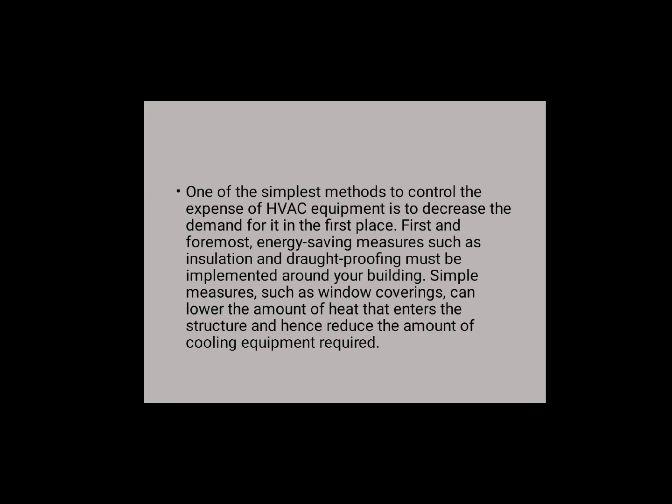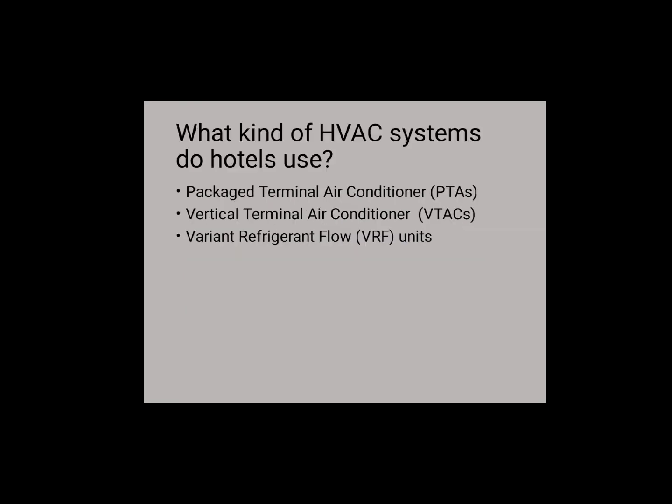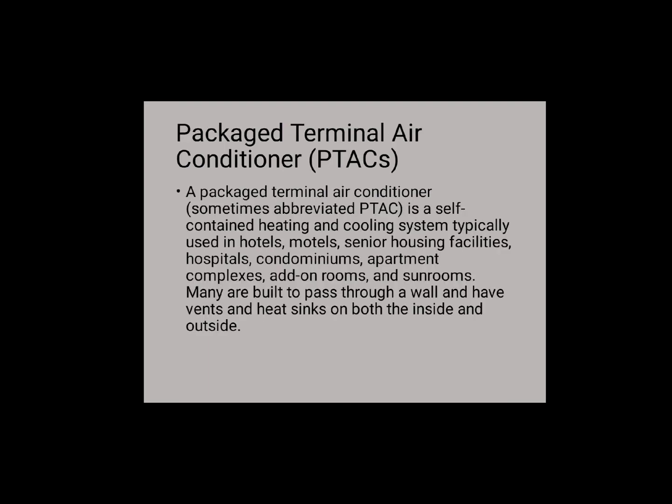One of the simplest methods to reduce the expenses of HVAC equipment is to decrease demand for it in the first place. Energy-saving measures such as insulation and draught-proofing must be implemented around your building. Simple measures such as window coverings can lower the amount of heat that enters the structure and hence reduce the amount of cooling equipment required. What kind of HVAC systems do hotels use? There are three HVAC systems that hotels use: package terminal air conditioner (PTAC), vertical terminal air conditioner (VTAC), and variable refrigerant flow (VRF) units.